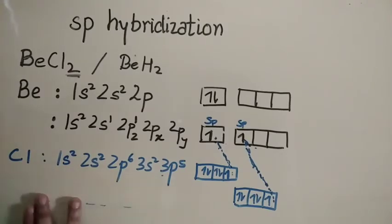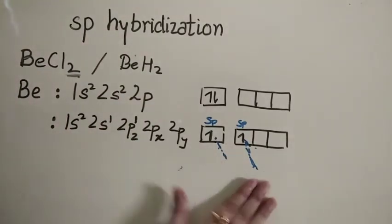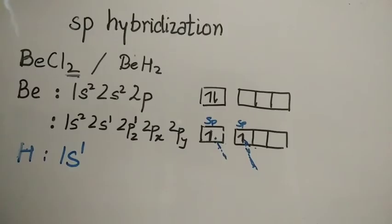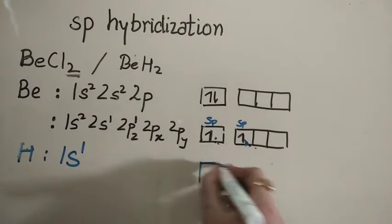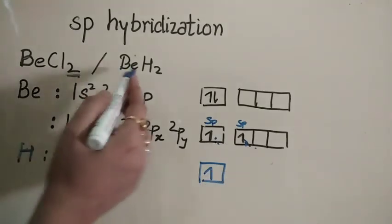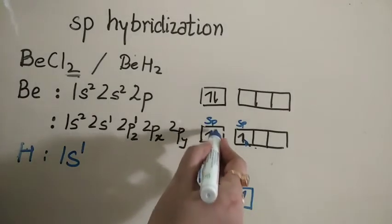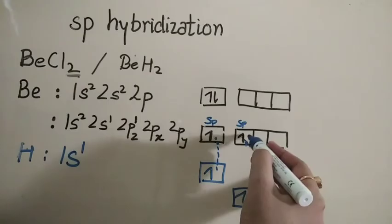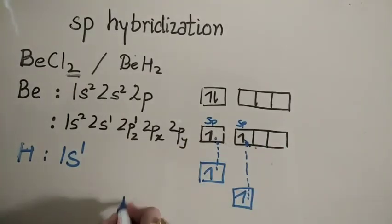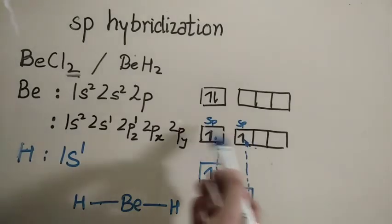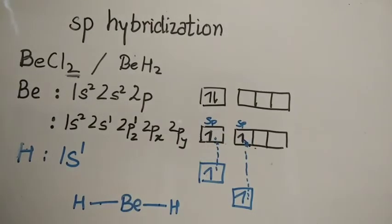Taking the example of BeH₂: hydrogen has the configuration 1s1. The sp hybridized orbital of beryllium combines with the s orbital of each hydrogen atom to form 2 sigma bonds. The shape is again linear. The hybridization is sp hybridization because only s and p orbitals are involved in bonding.